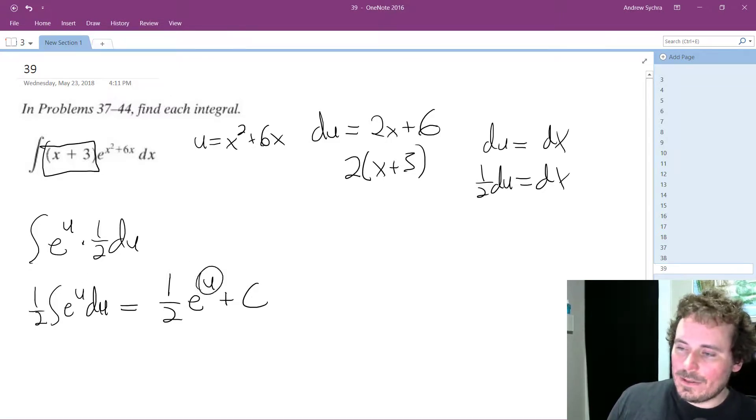But now what we do is we substitute back in, and what we end up with is one half e raised to the x squared plus 6x, and then plus c.